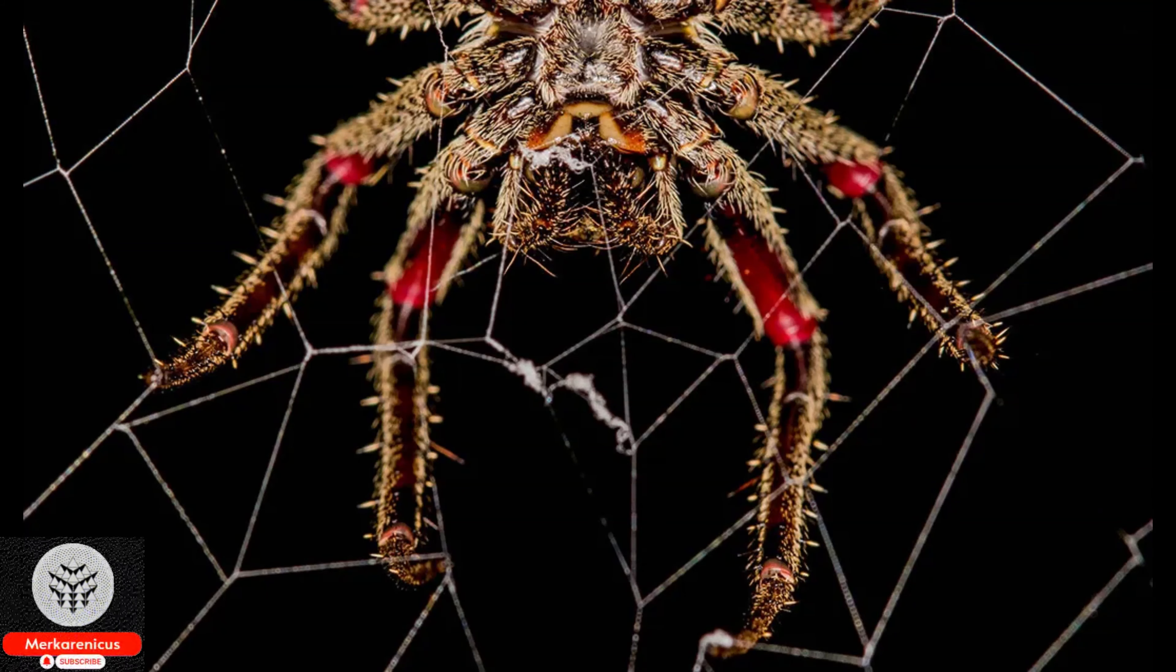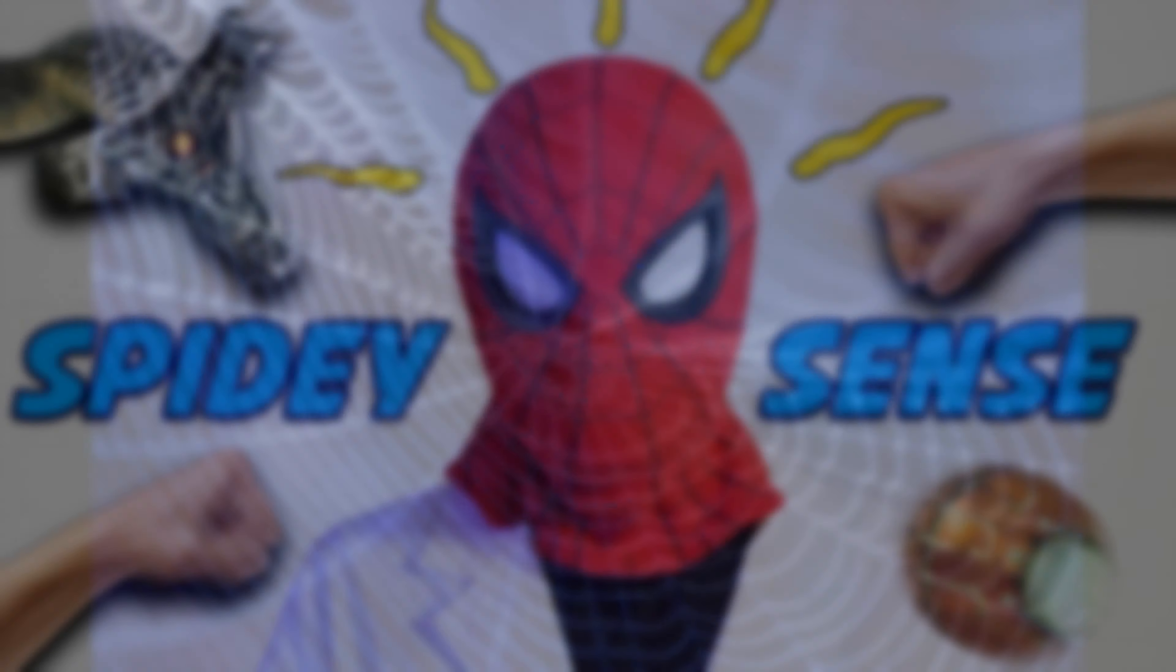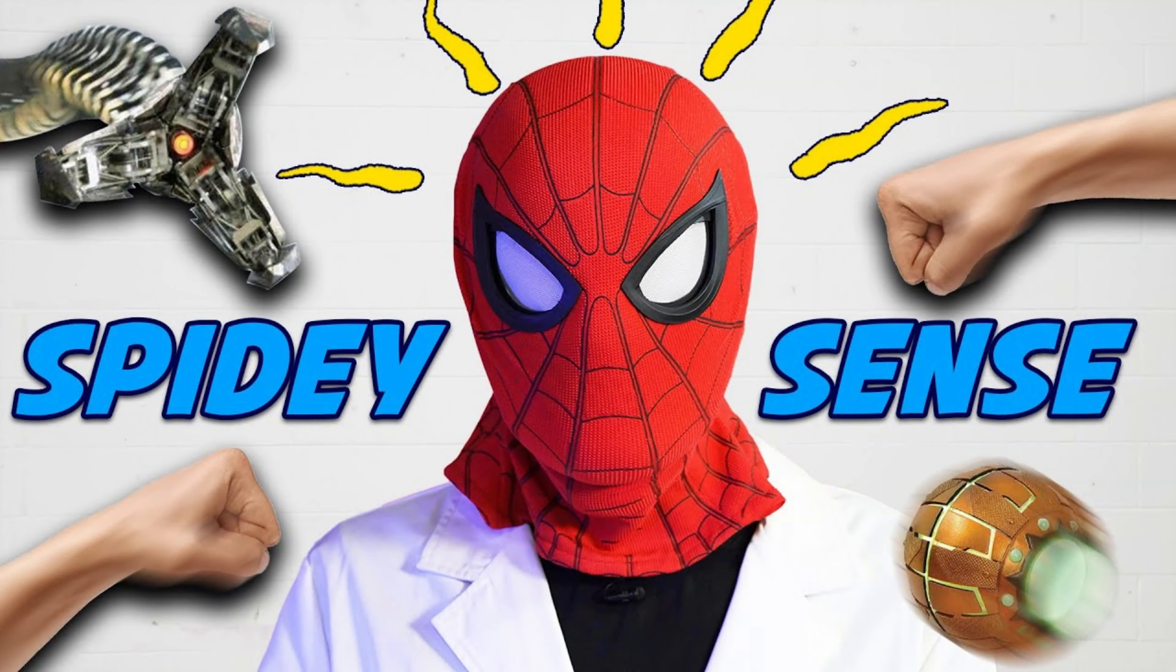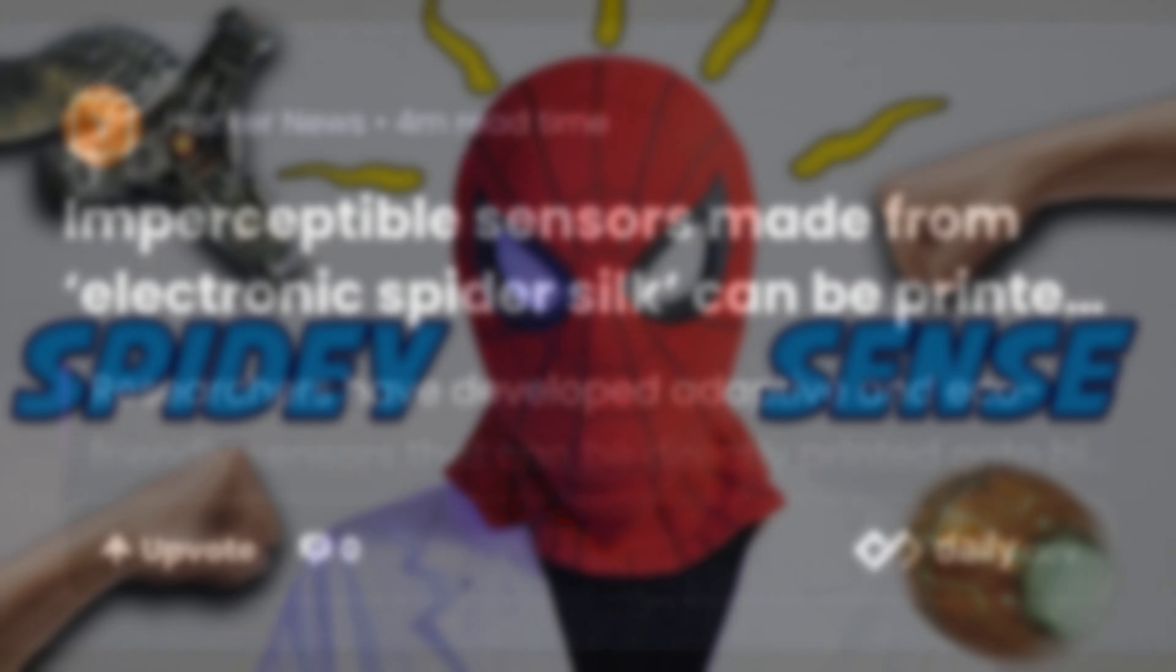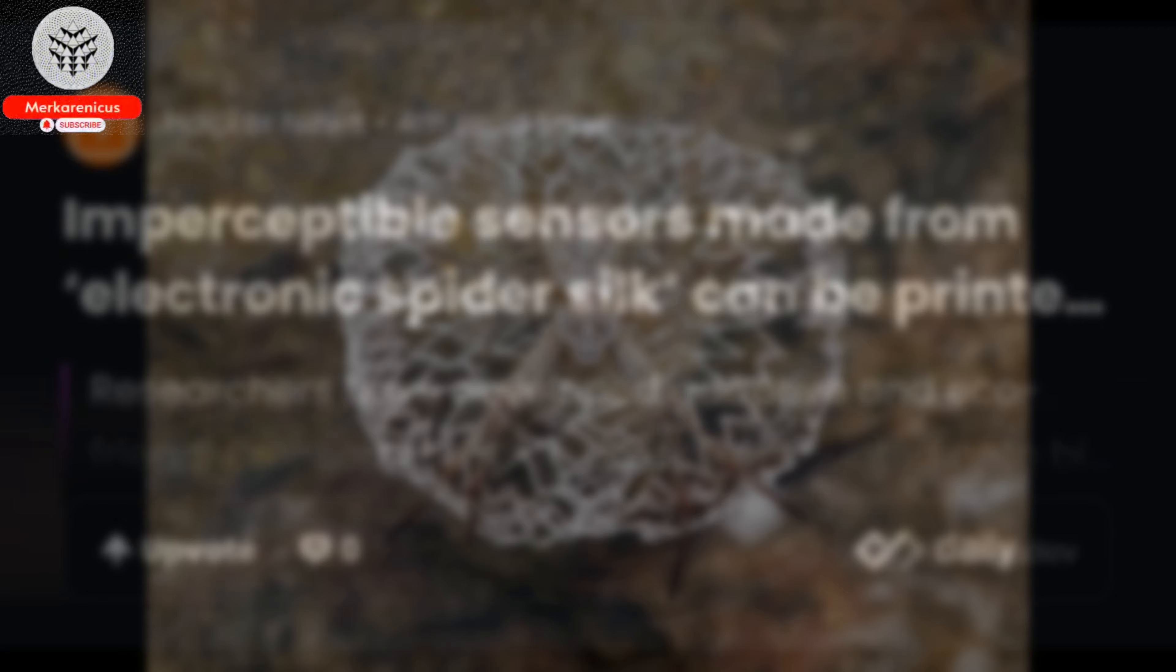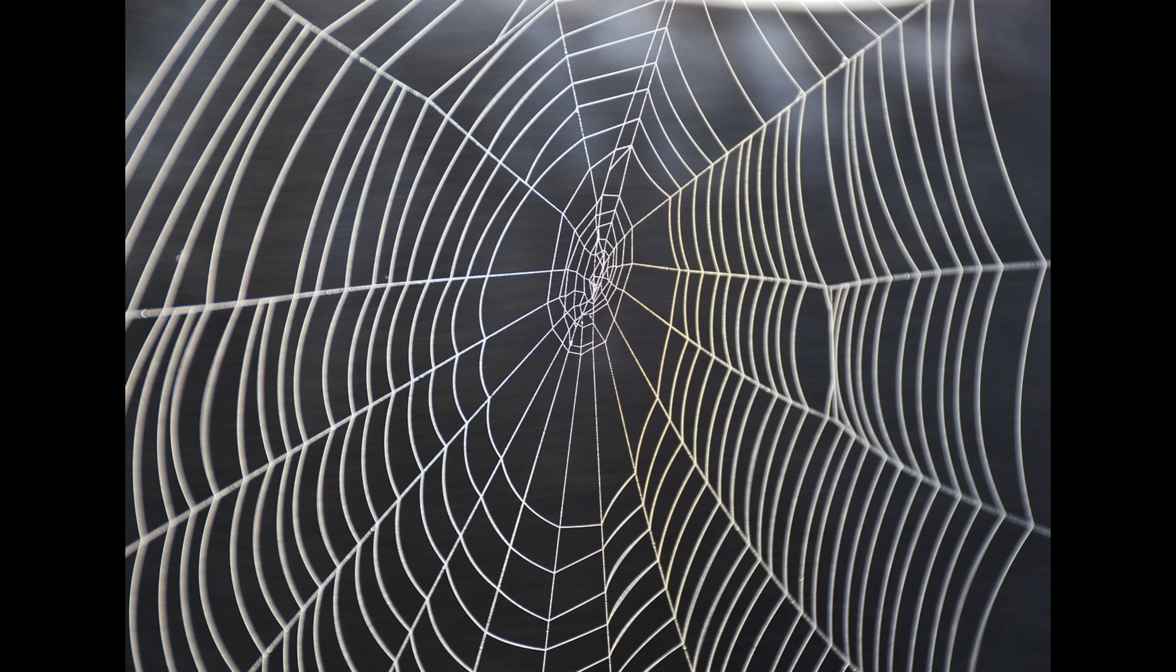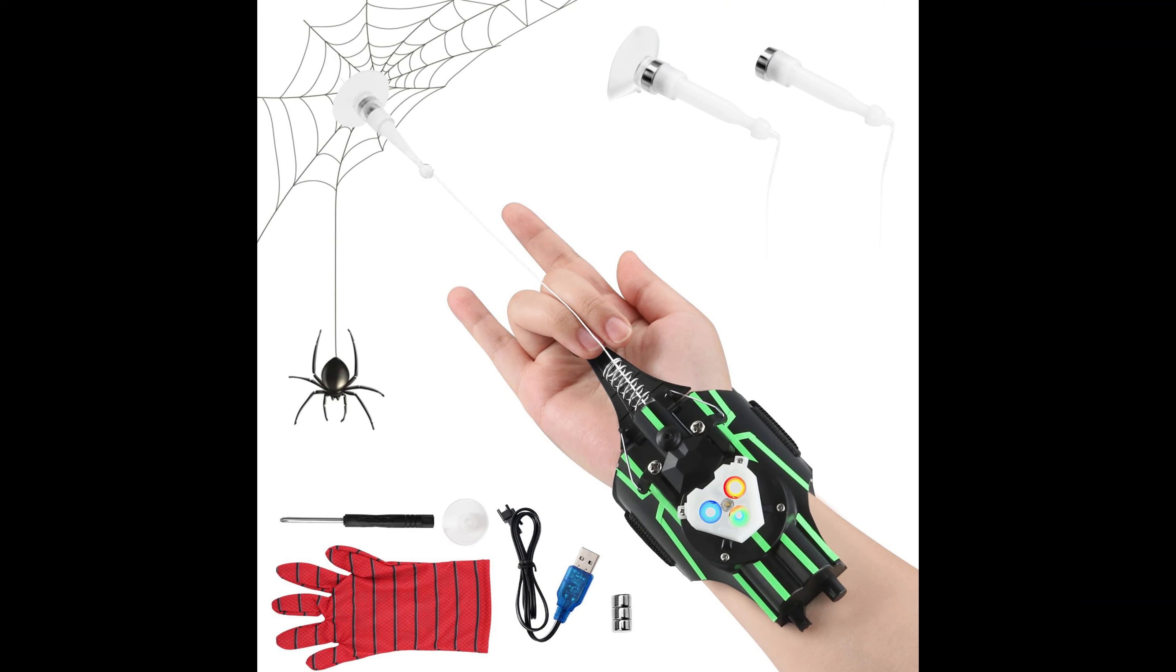Innovatively, the application of electronic spider silk enables the seamless printing of imperceptible sensors directly onto the surface of human skin. Greetings everyone, today's video focuses on an exciting development by researchers at the University of Cambridge. They have successfully created sensors using a special type of material called electronic spider silk that are so discreet they can be directly printed onto human skin.